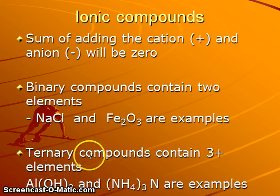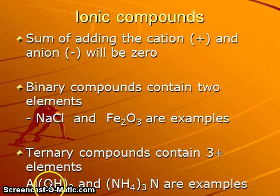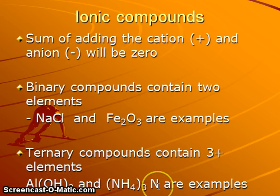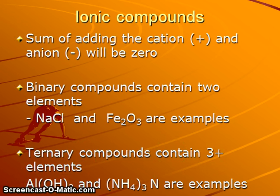Whereas ternary compounds are going to contain three or more elements. Aluminum hydroxide is one example. Ammonium nitride is a different example of a ternary compound. All of these are examples of ionic compounds.